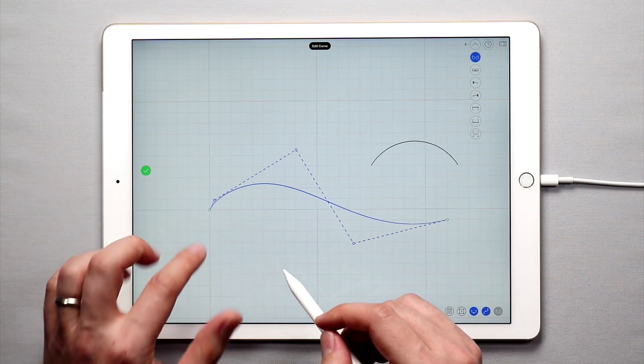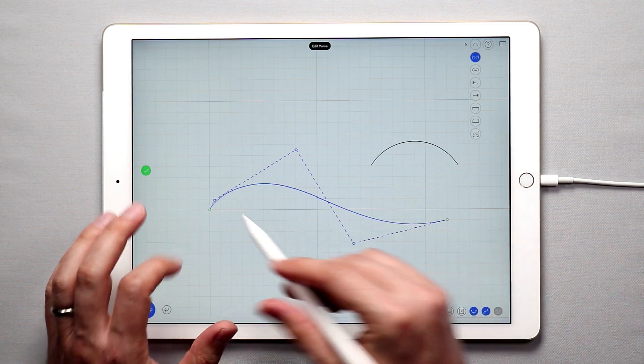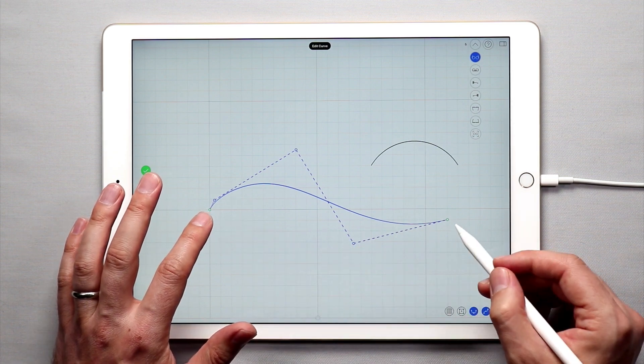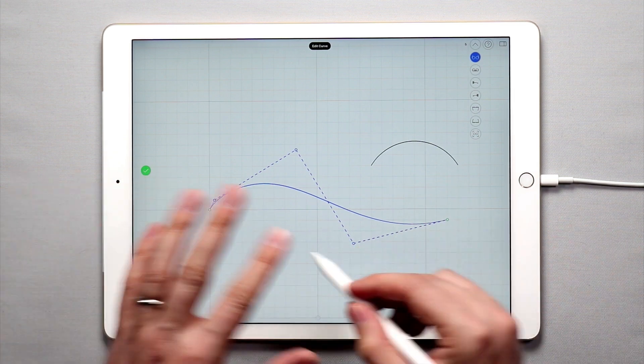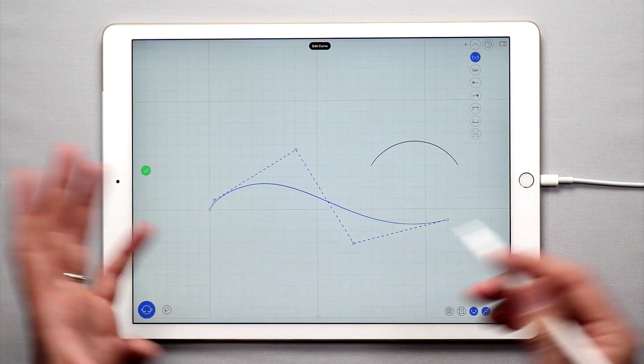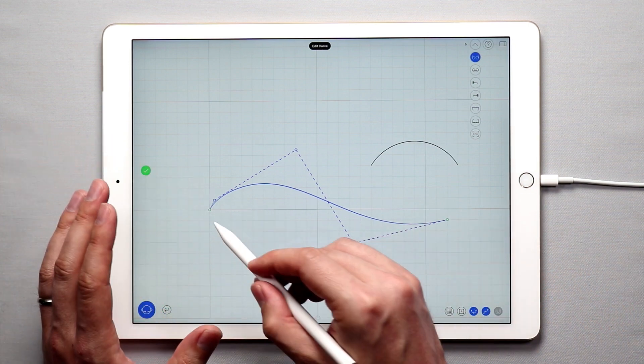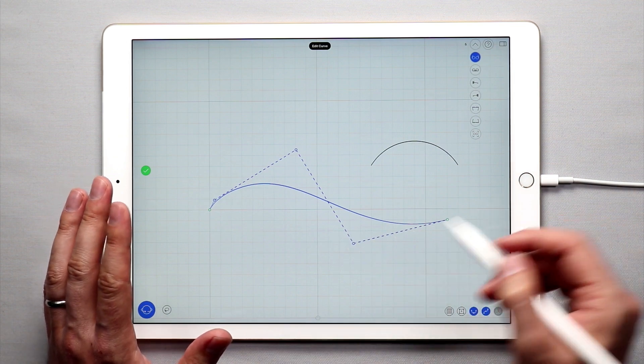The control points come in a couple different colors. The endpoints—those are the points on the ends of a curve—are green. They're helpful to show where, if you have several curves selected, one curve stops and another one starts.